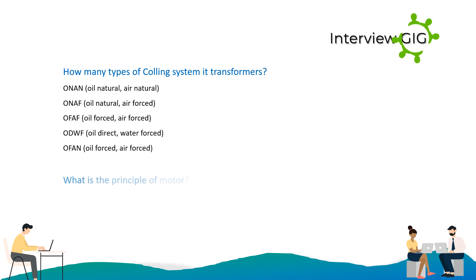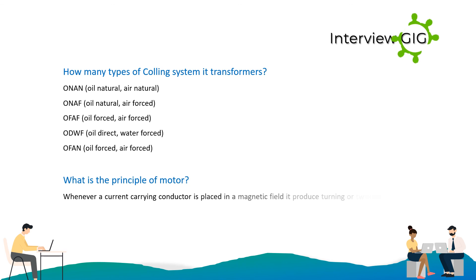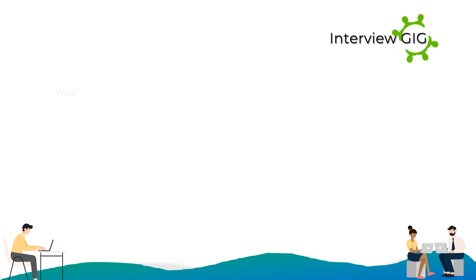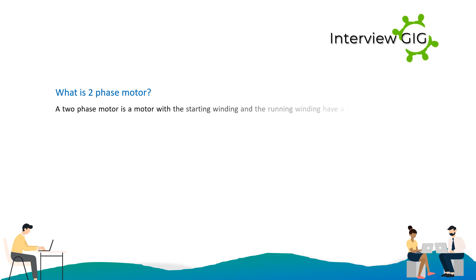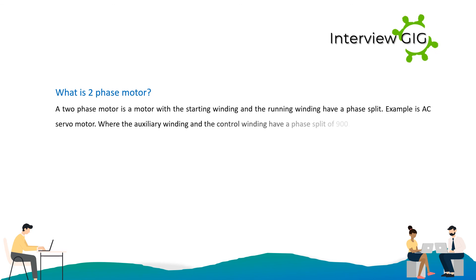What is the principle of a motor? Whenever a current-carrying conductor is placed in a magnetic field, it produces a turning or twisting movement called torque. What is a two-phase motor? A two-phase motor is one where the starting winding and the running winding have a phase split. An example is an AC servo motor, where the auxiliary winding and the control winding have a phase split of 90°.